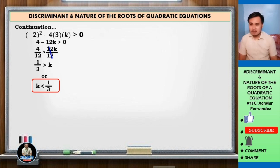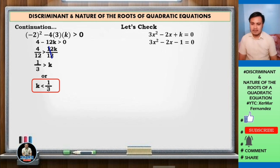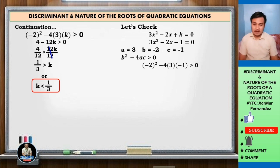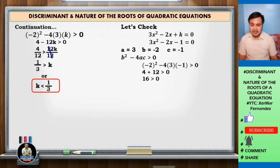1 third is about 0.33, so k must be less than that. For example, let k equal negative 1. Substituting into 3x squared minus 2x minus 1 equals 0: a equals 3, b equals negative 2, c equals negative 1. Check: negative 2 squared minus 4 times 3 times negative 1 is greater than 0. That gives 4 plus 12 equals 16, and 16 is greater than 0. Check.